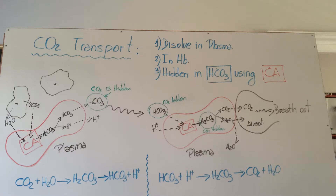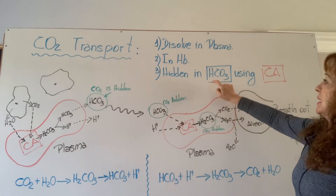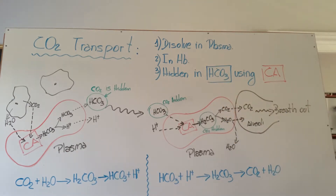The other one is bound with the hemoglobin — not with the heme group, not with iron. It's just in the globin parts of the hemoglobin, a little tiny percent. But the most common way that we transport carbon dioxide is hidden in bicarbonate, using one enzyme that converts carbon dioxide into bicarbonate or sometimes carbonic acid.